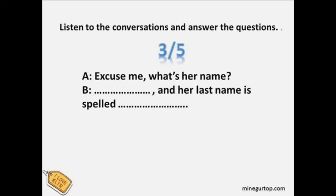3. Joe, this is my friend Sarah Green from France. Excuse me, what is her name? Sarah. S, A, R, A, H. And her last name is spelled G, R, E, E, N. Green. Thank you.